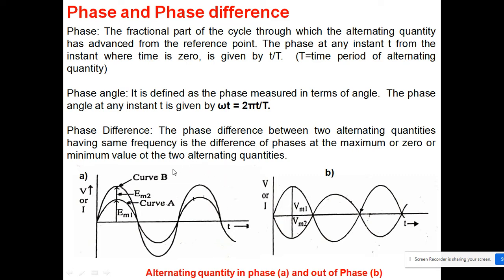The phase angle is defined as the phase measured in terms of angle, given by omega t, where omega equals 2 pi upon T. This is measured in radians and is also known as the electrical angle. Note that 2 pi radians equals 360 degrees.